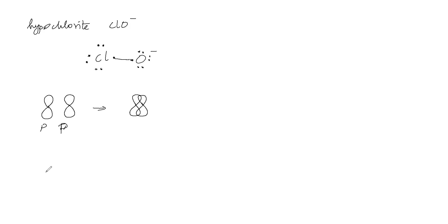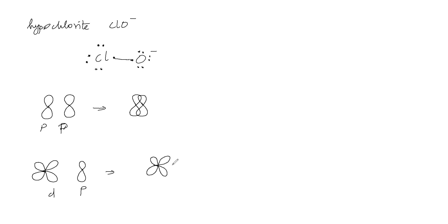What about d orbitals? Can d orbitals give pi bonding? Yes — a d orbital and a p orbital can undergo lateral overlapping, so pi bonding between d and p orbitals is possible. Both p-p and d-p lateral overlapping can give pi bonding.